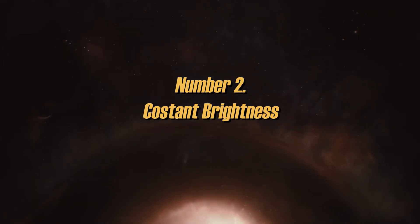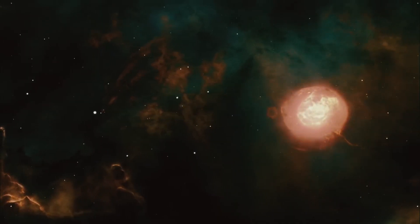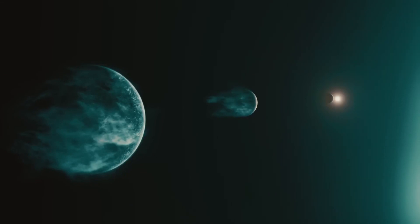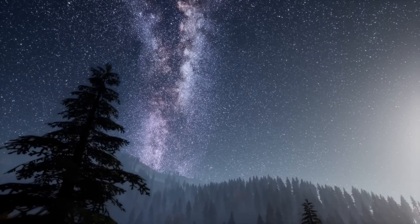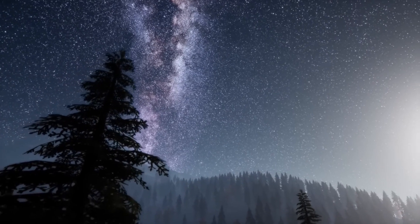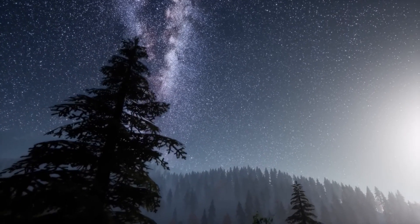Constant brightness. After the initial explosion, the supernova would maintain an extremely high luminosity for a period of weeks or months. During this time, it would be visible both day and night, meaning that it could even be seen in the presence of sunlight.